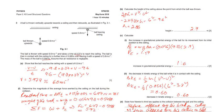See, the increase in gravitational potential energy of the ball for its movement from its initial position to the ceiling. The change in potential energy formula is mgh, where delta h is the difference in height.